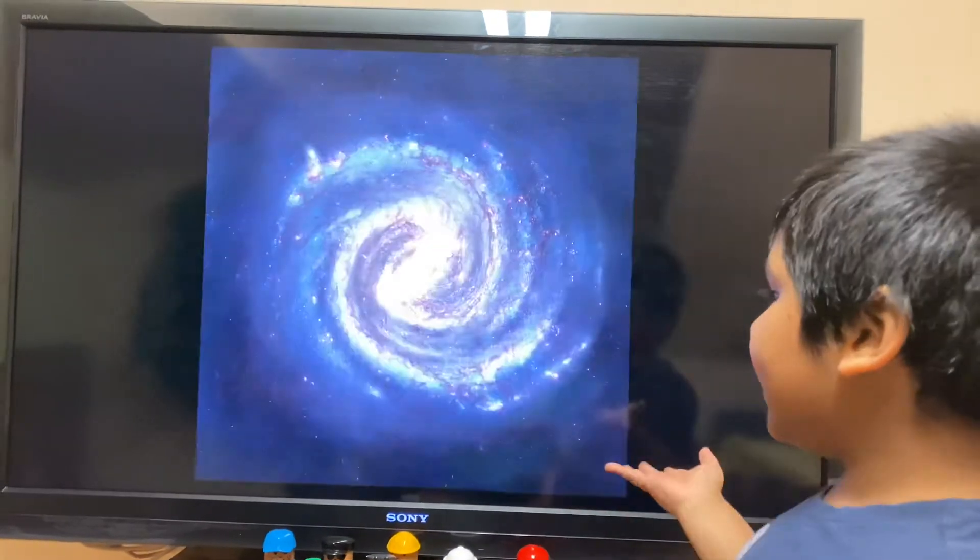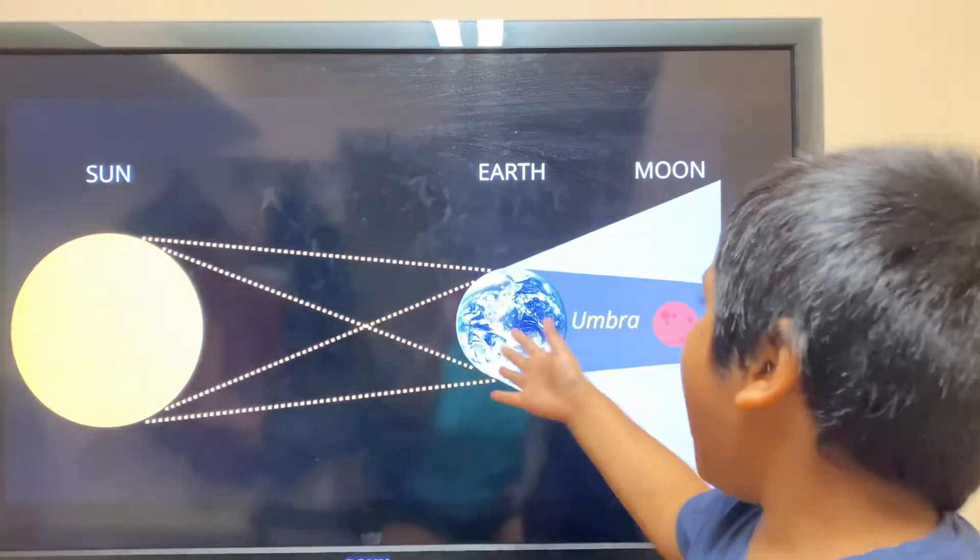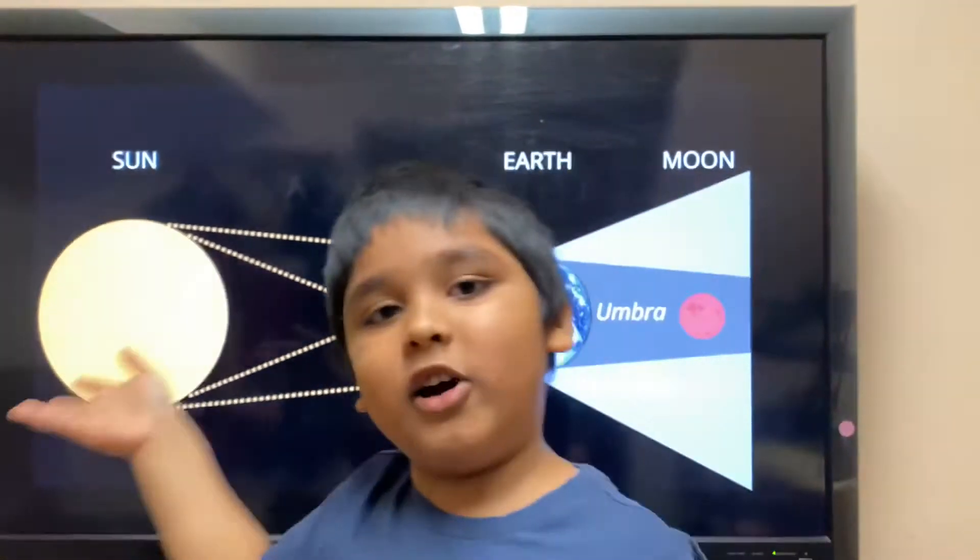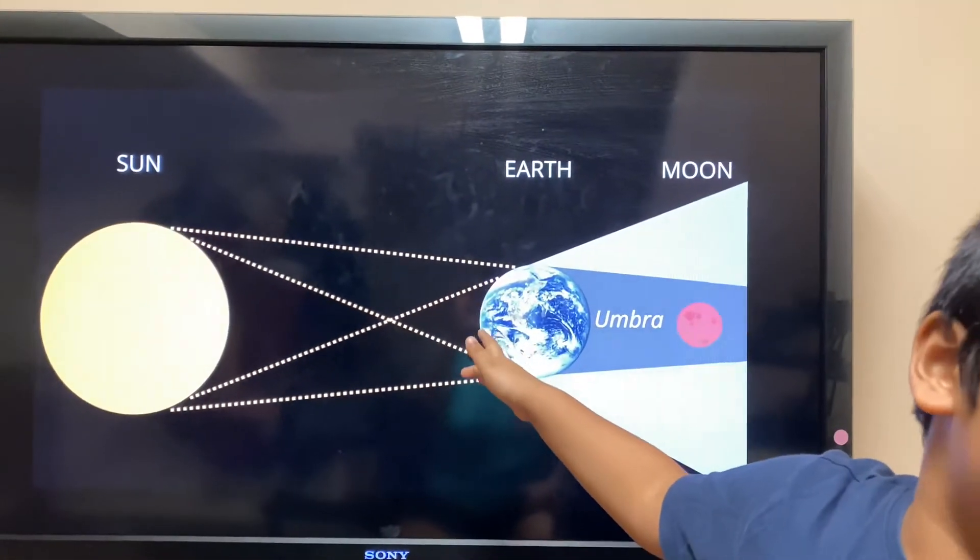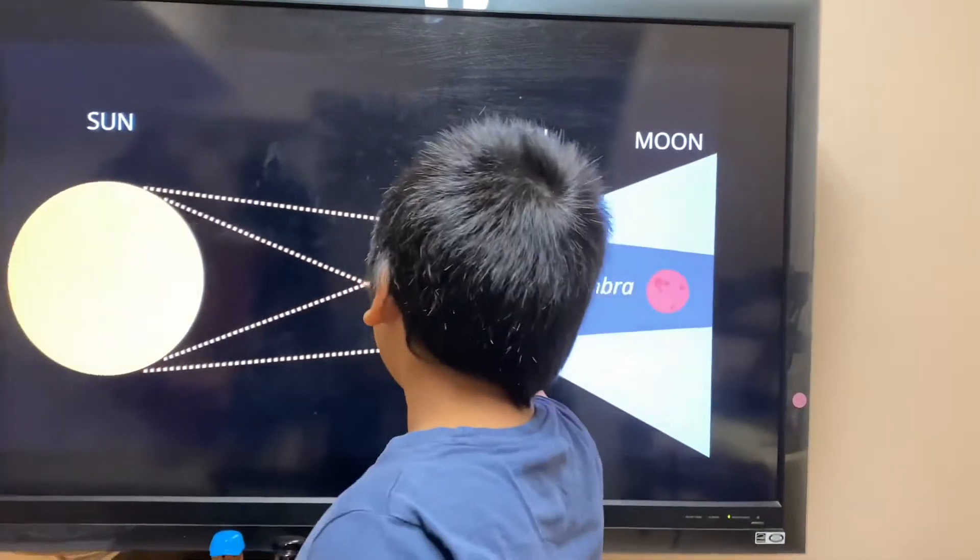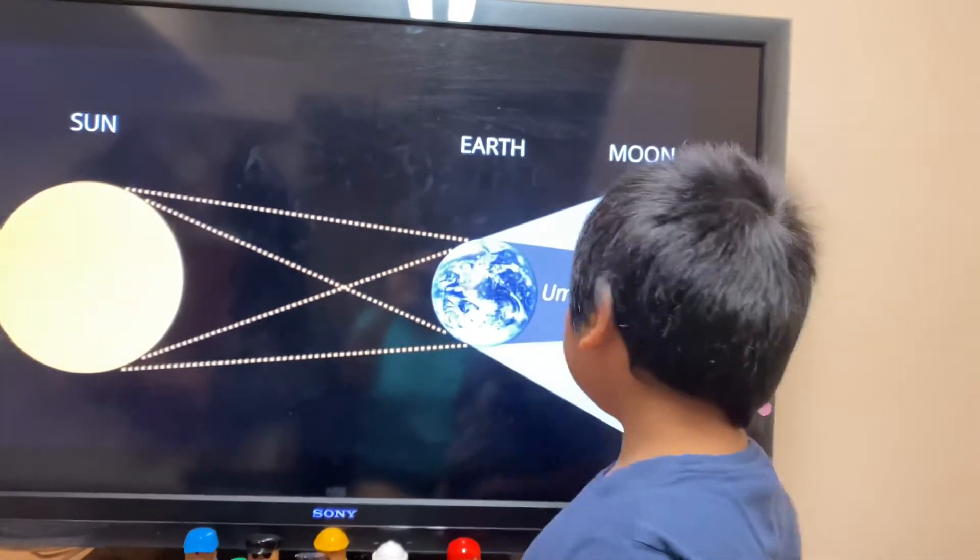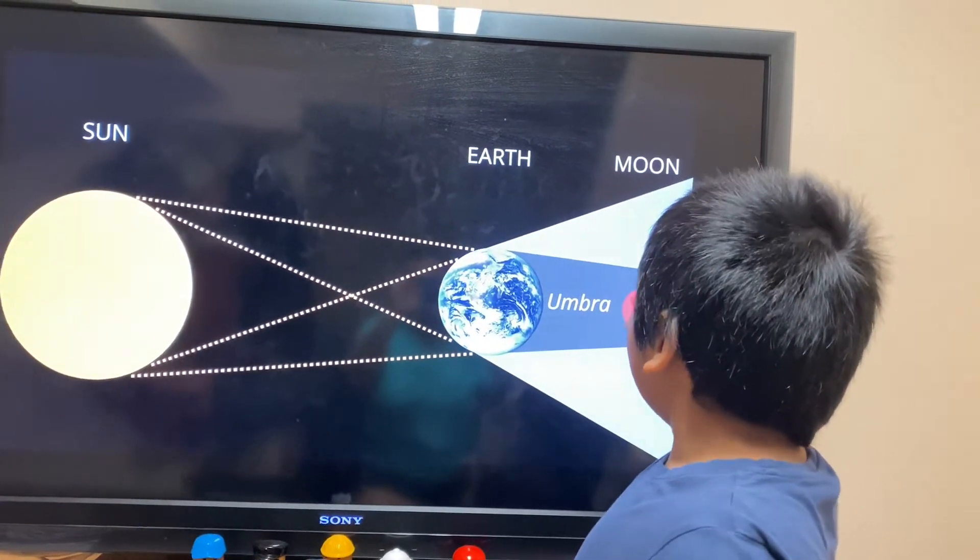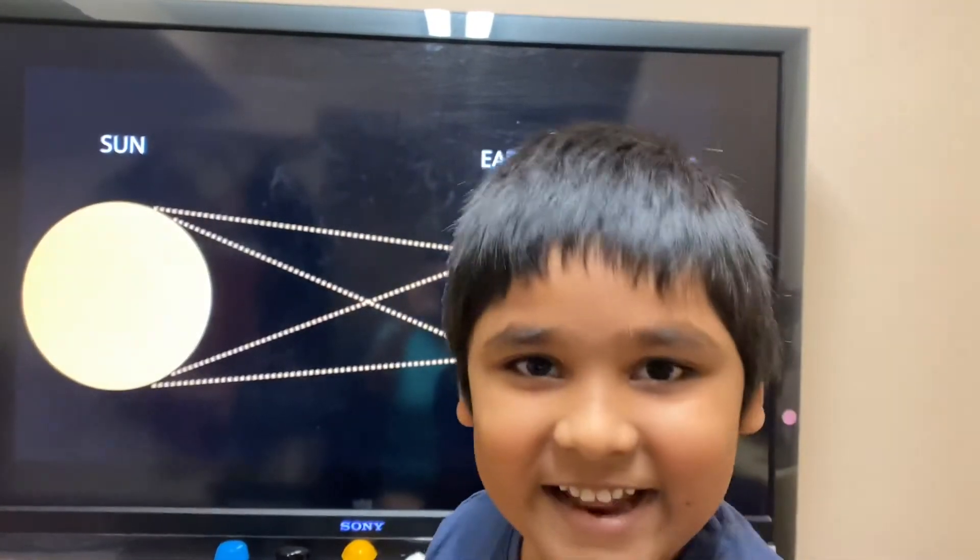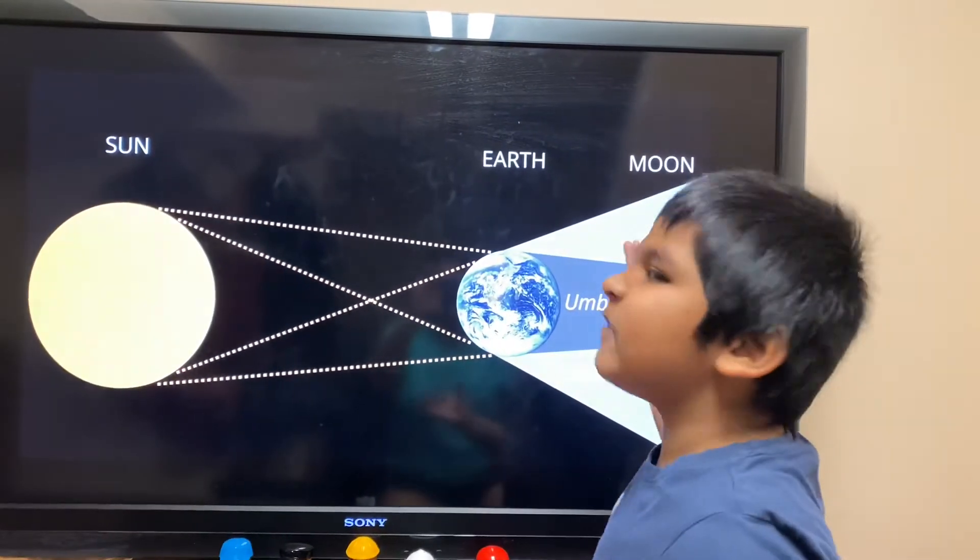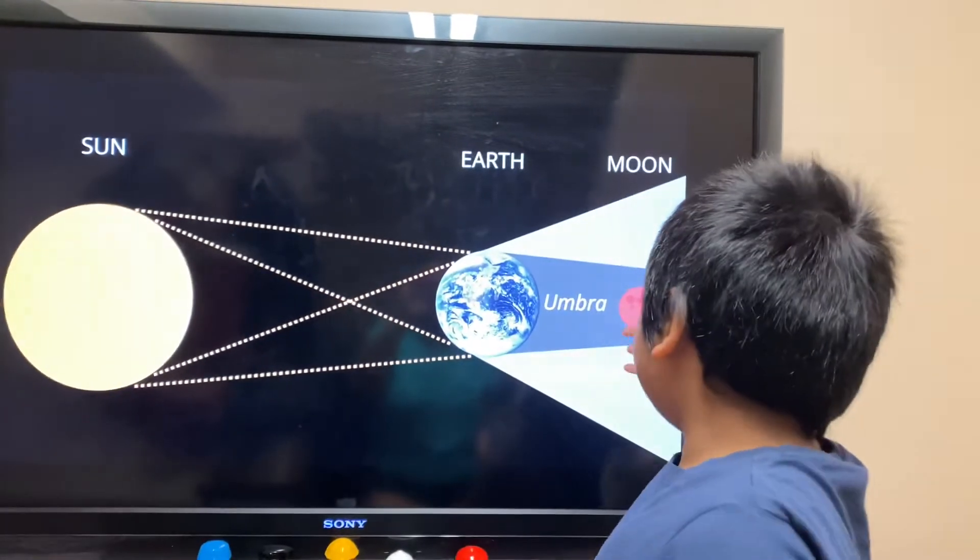And the next one is a lunar eclipse. Here's a picture. So a lunar eclipse is when the Earth is blocking the sun from some sunlight. And when the Earth blocks it, the moon will become red. That's my favorite color. It's really famous for making the moon red.